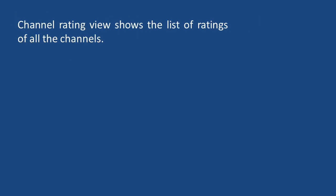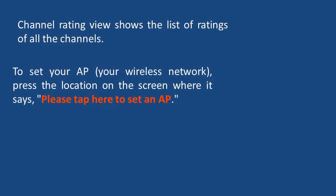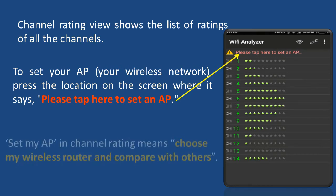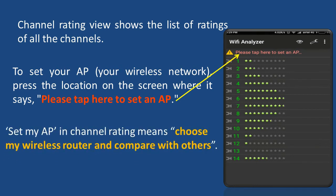Click on channel rating from the menu. Channel rating view shows the list of ratings for all the channels. To set your access point, press the location on the screen where it says 'Please tap here to set an AP.' Setting your AP in channel rating means choosing your wireless network and comparing it with others. This is not any access point settings on the router.